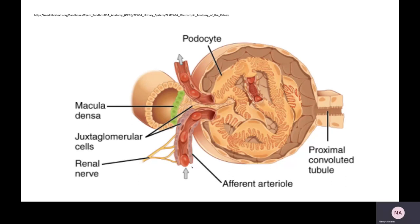The afferent arteriole has a larger diameter than the efferent arteriole. When you have a big conduit feeding into a narrower conduit, there will be a buildup of pressure. That buildup of pressure will force anything small enough out through those filtration slits. The podocytes and their interlocking pedicels are there, and anything small enough gets squeezed out between them and ends up within the Bowman's capsule.